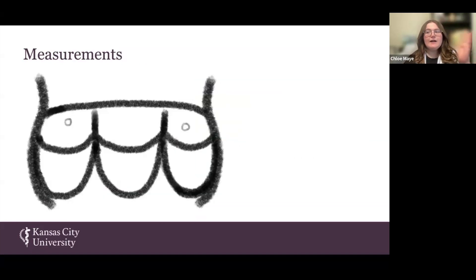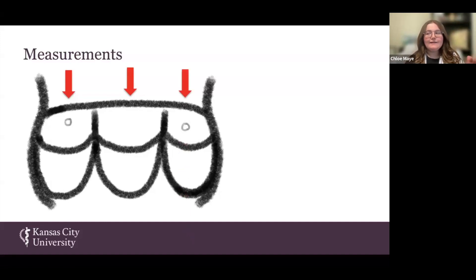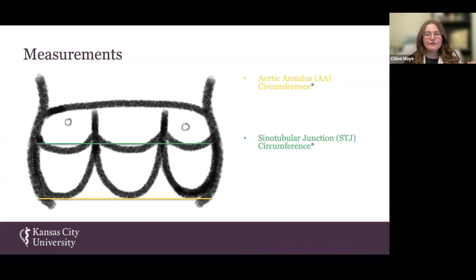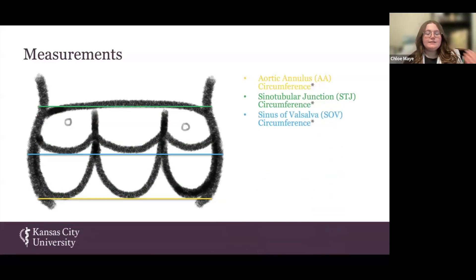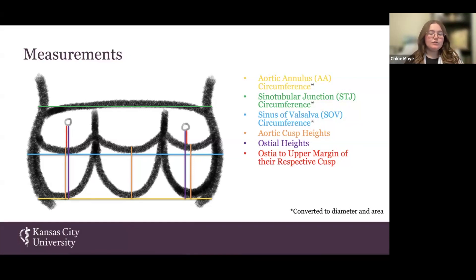This is a drawing of an aorta that has been cut at commissure 3 and laid flat. Moving from left to right, you can see the right coronary ostium in the anterior aortic sinus, the right posterior aortic sinus, and then the left coronary ostium in the left posterior aortic sinus. These colored lines represent where we took our measurements for aortic annular circumference, sinotubular junction circumference, sinus of Valsalva circumference, aortic cusp heights, ostial heights, and the distance between the ostia and the upper margin of their respective cusp. These circumference measurements were then converted to diameter and area for the results section.